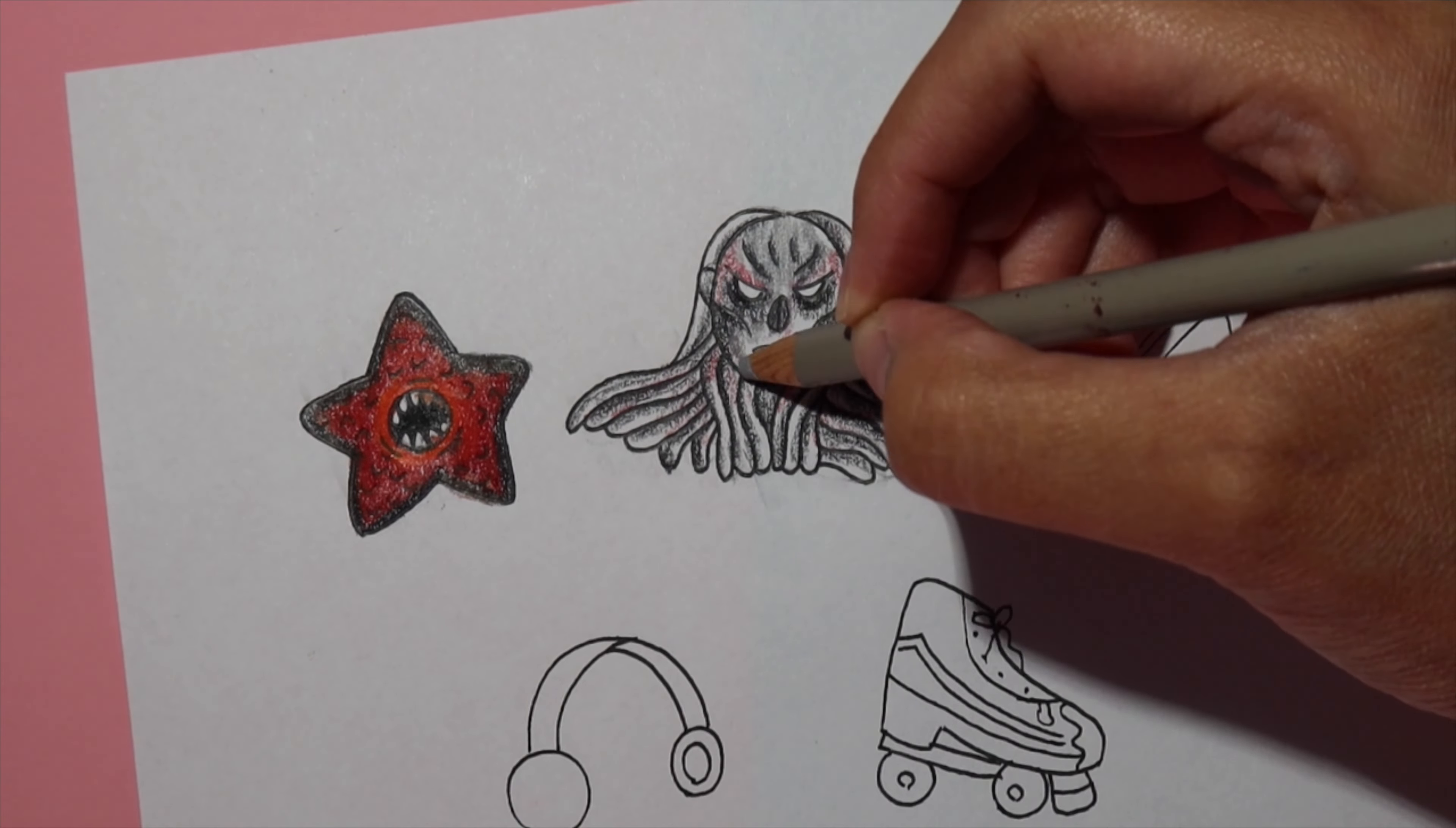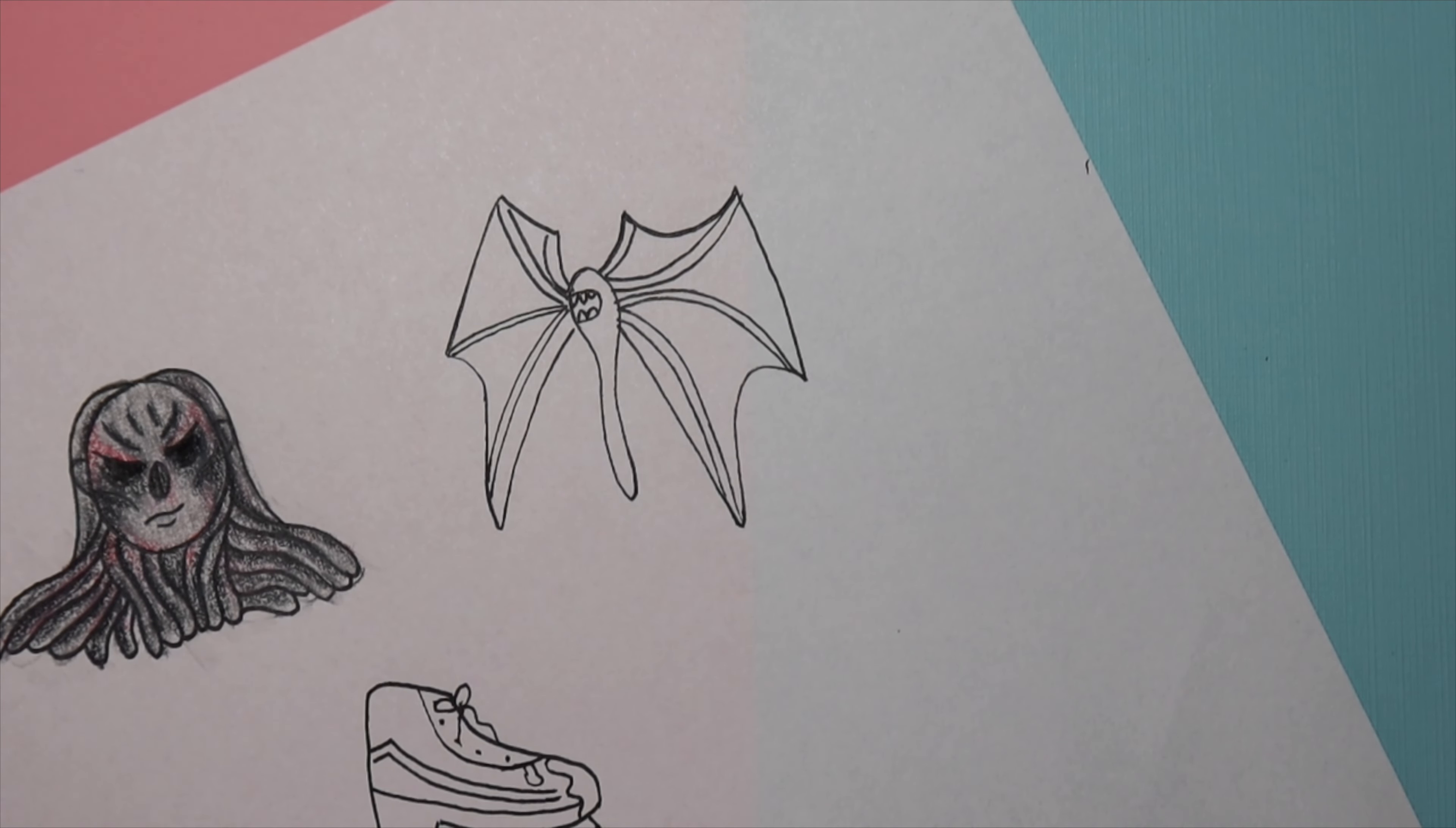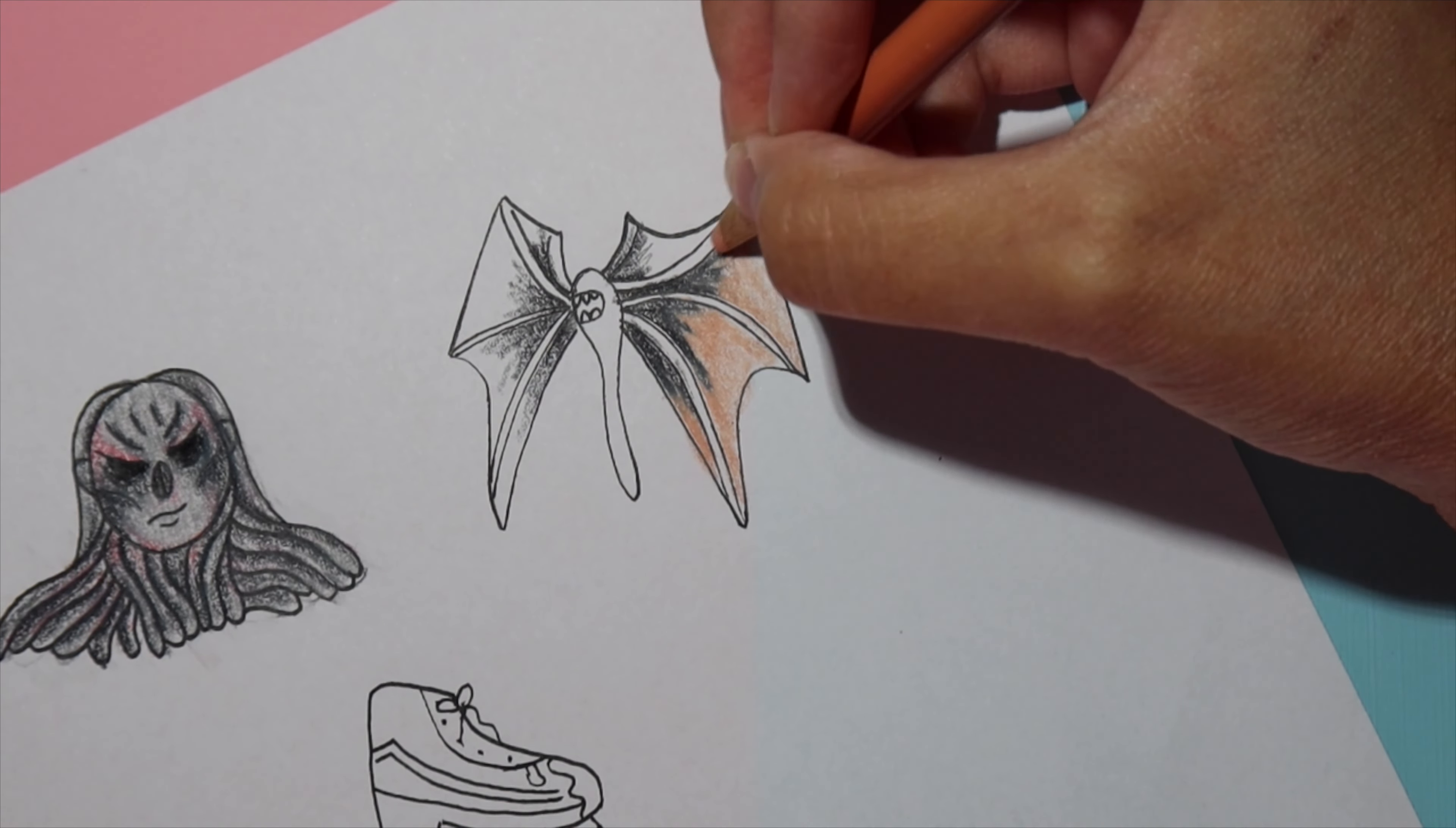Same with Vecna over here. I went in and made shadows with my black color pencil. Then I'm adding hints of red here and there, mainly by his eyes and in his little tentacle things. And then I went in and colored him lightly with a gray color pencil.